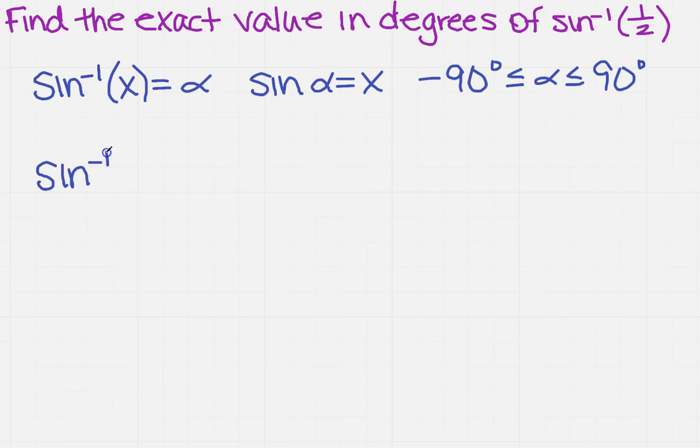I have an inverse sine, but instead of x now, I have a 1 half, and that would equal to alpha. So alpha is what I need. Well, it still doesn't look like I can solve it, right? So now, what if I rewrite it as the sine of alpha equals 1 half?